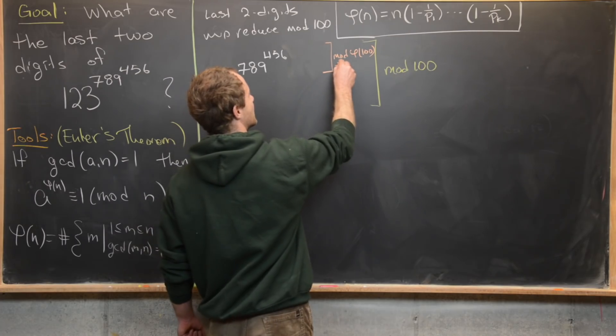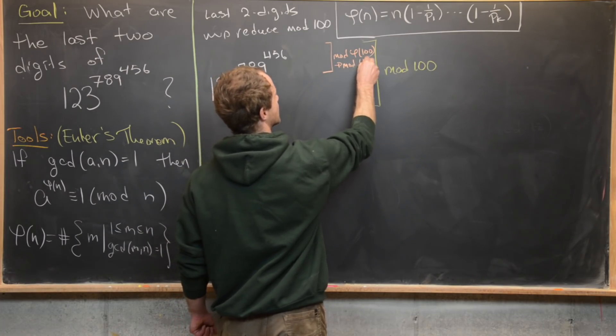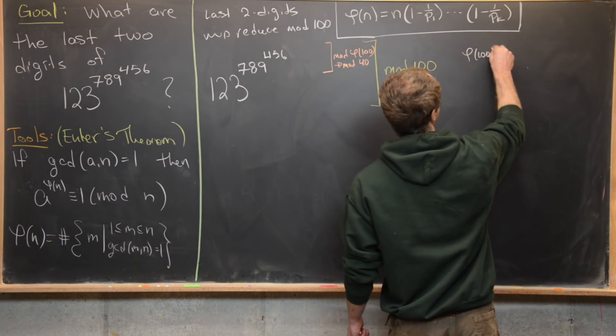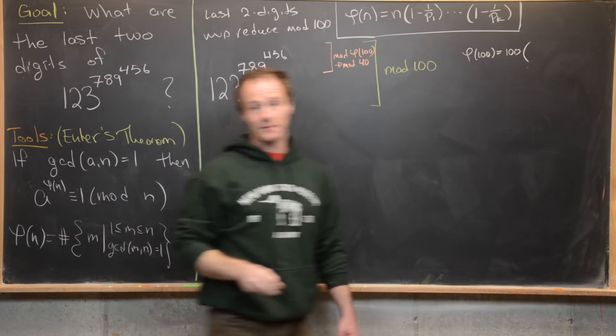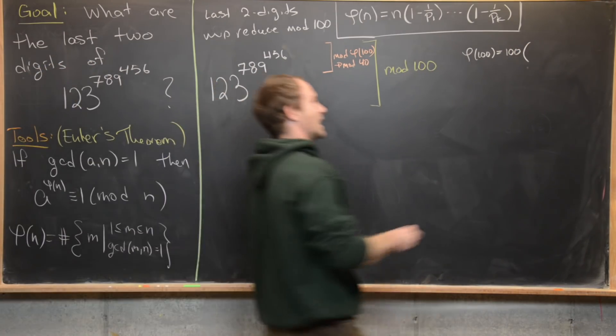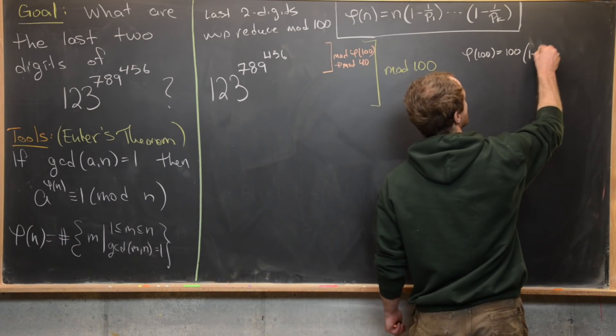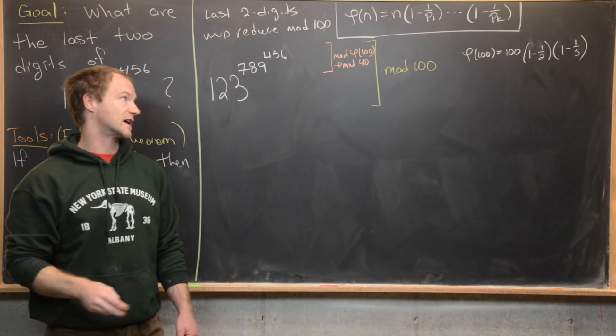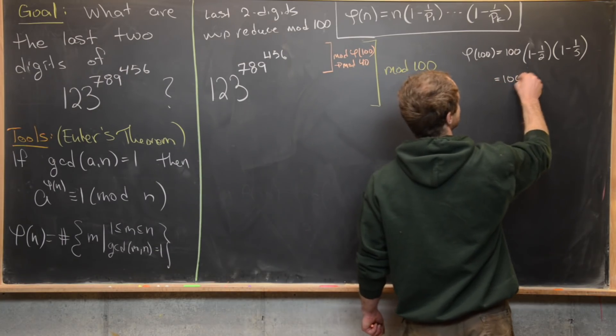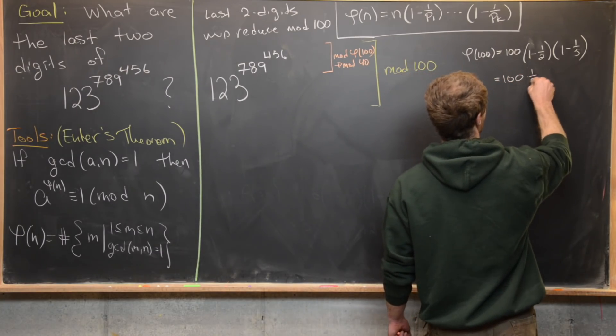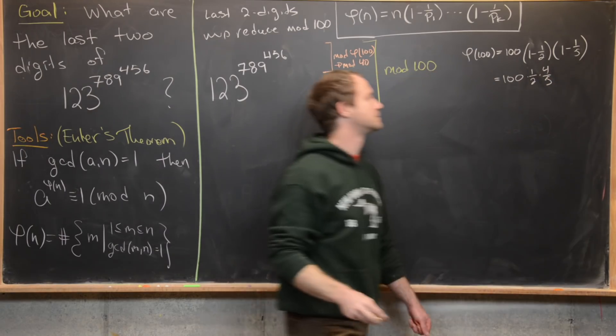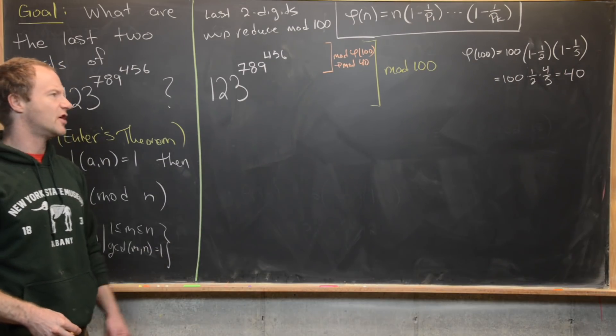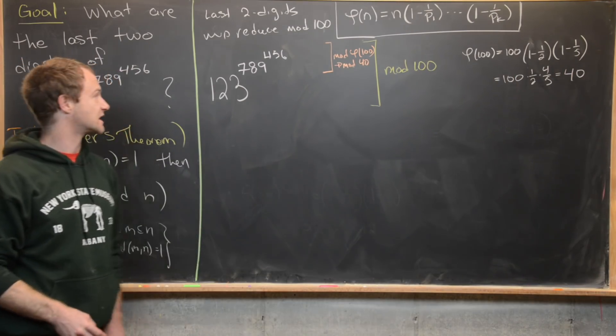But I might as well point out that the Euler phi function of 100 is 40. Maybe we can calculate that over here on the side. So phi of 100. So that's going to be 100 times one minus one over all the prime factors. So that's going to be one minus half times one minus a fifth. Two and five are the only prime factors of 100. So let's see what that gives us, that gives us 100 times a half times four fifths. But then that very quickly becomes 40. So notice we have 100 divided by 10 times four. So that's going to be 40.